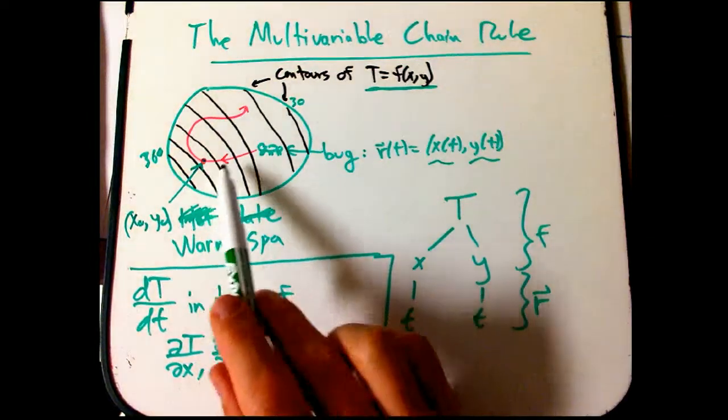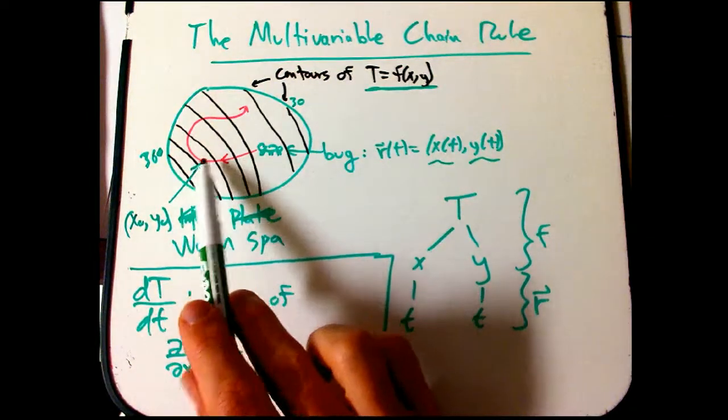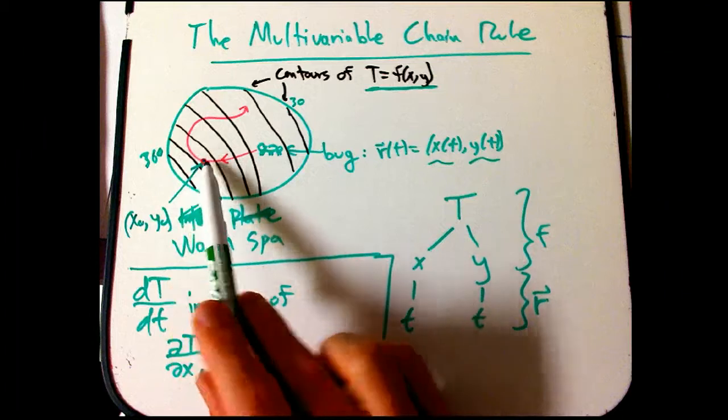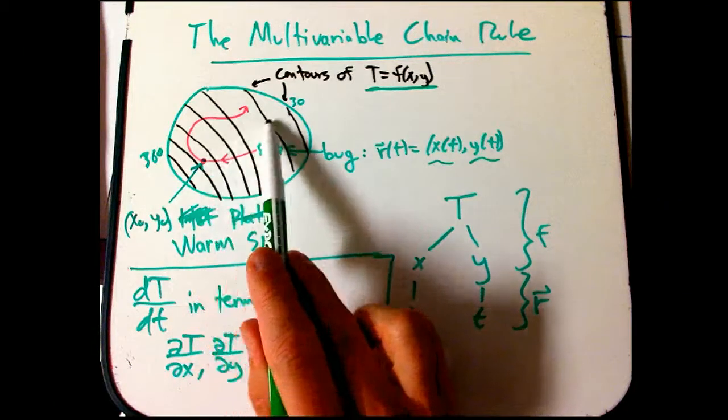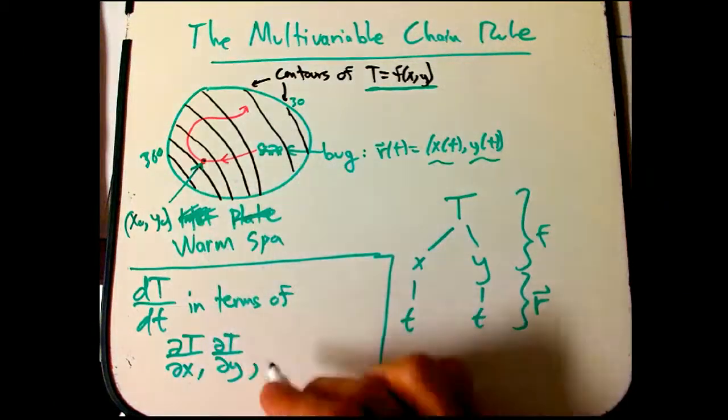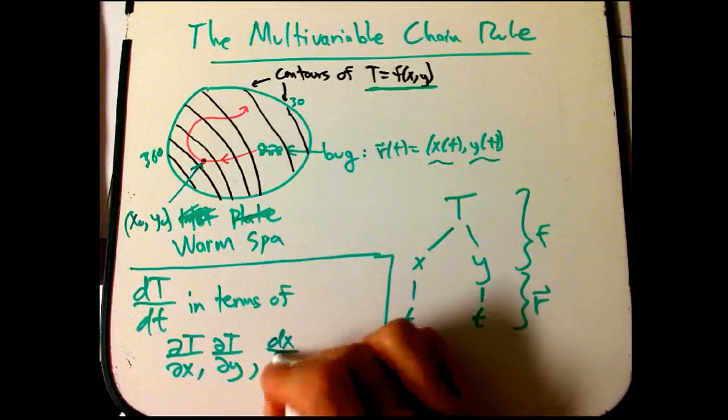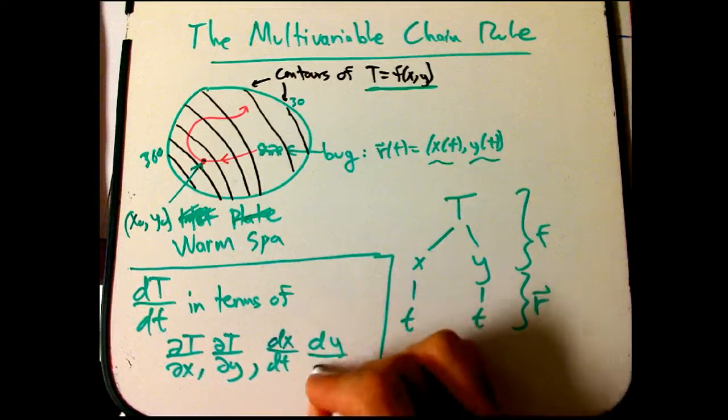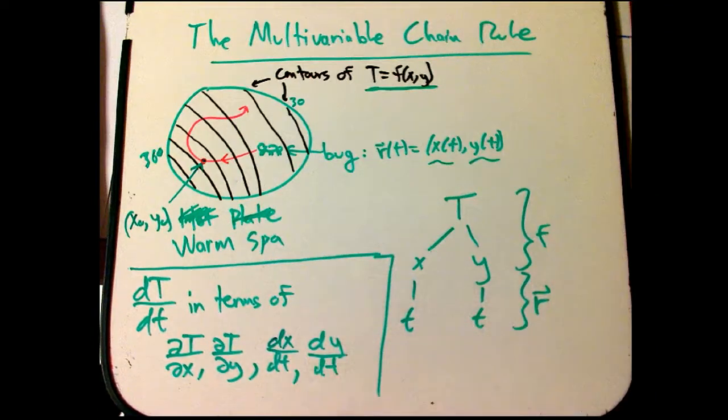But we also need to know how fast the bug's going and where. If he's going along a contour line, he probably shouldn't get a lot of change in temperature. If he's going this way, he's going to go down in temperature. If he goes this way, he's going to go up. Well those are expressed by the components of the velocity.